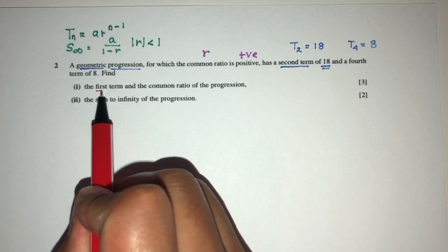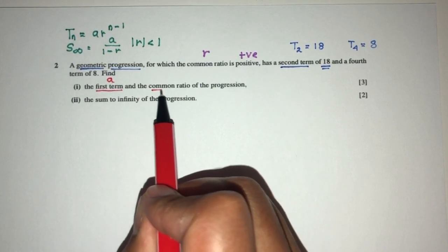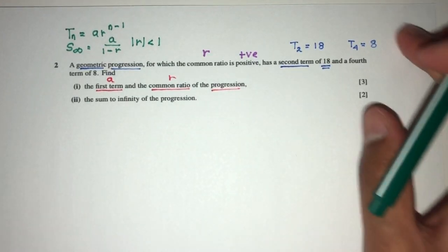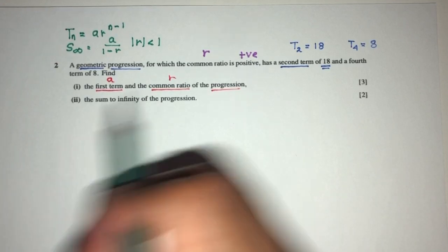which is the value of a, and the common ratio, which is the value of r of the geometric progression. So, pretty easy, using these given values.